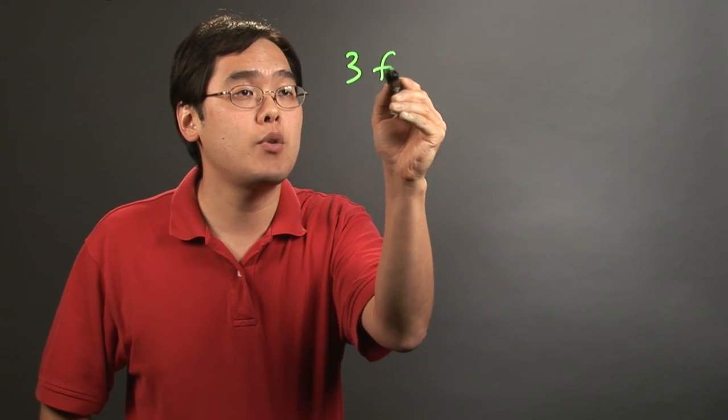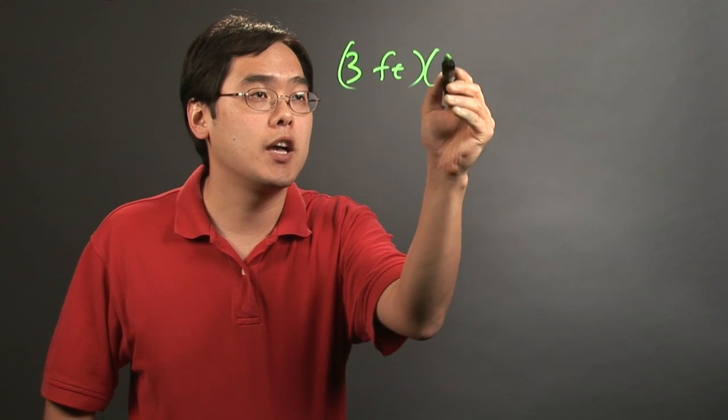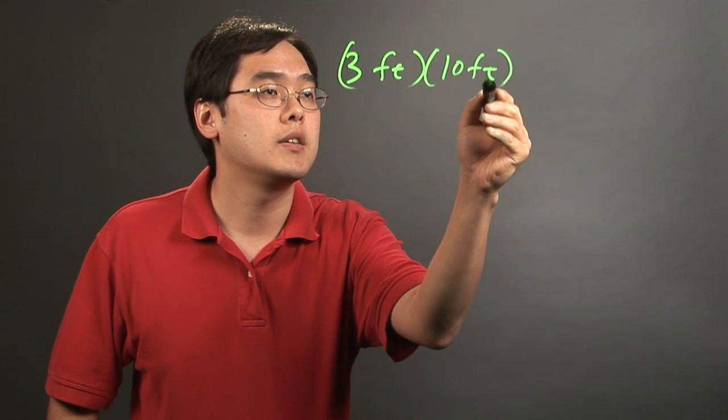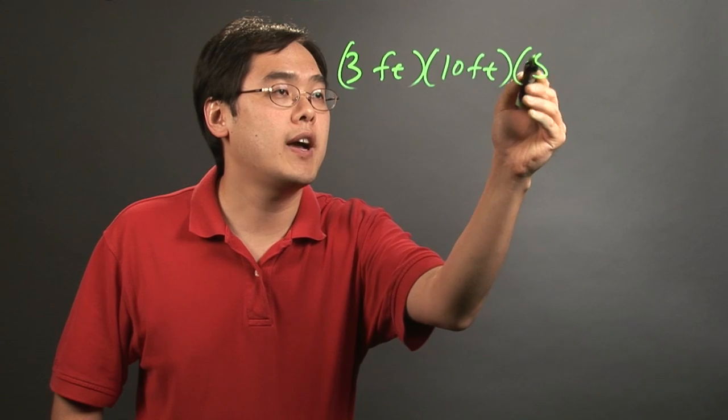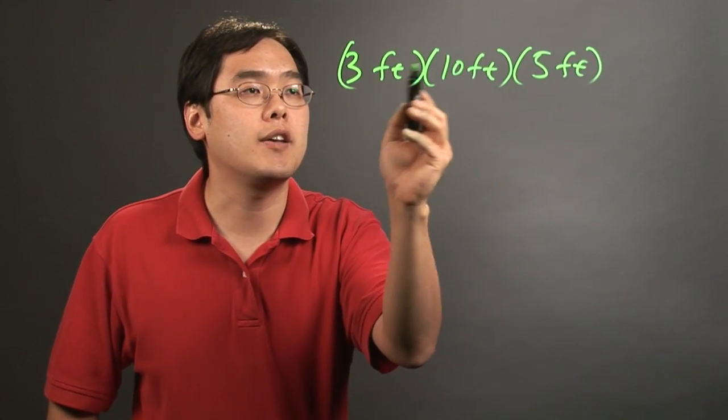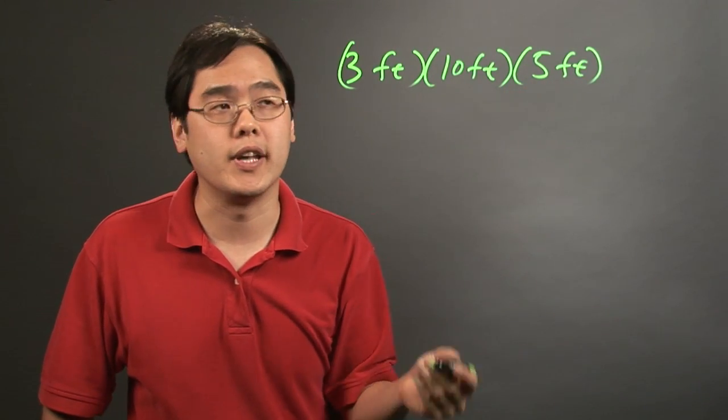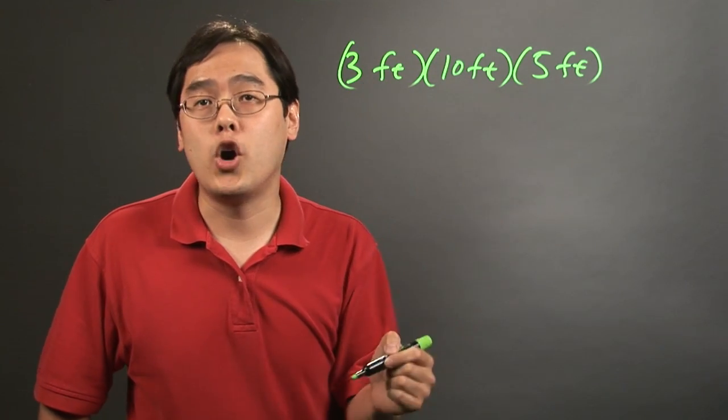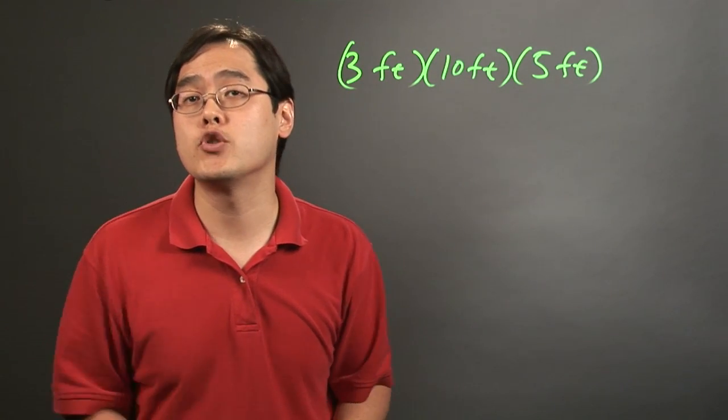So if you have 3 feet times 10 feet times 5 feet, assuming you have length, width, and height of a box respectively, you want to multiply all the numbers, but you also want to multiply by the individual units themselves.